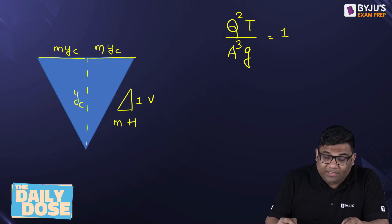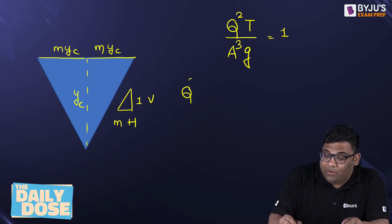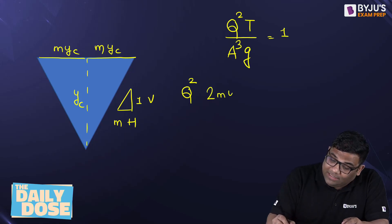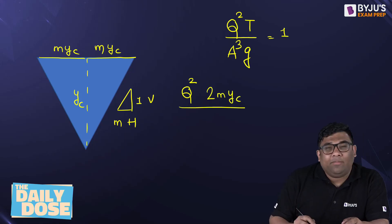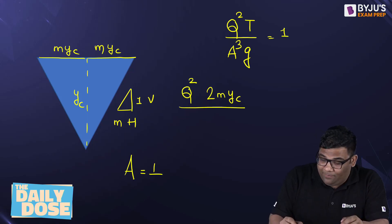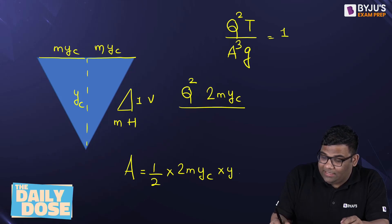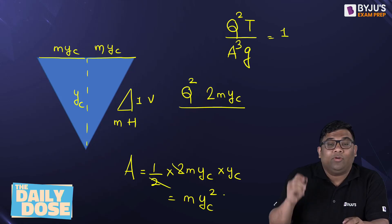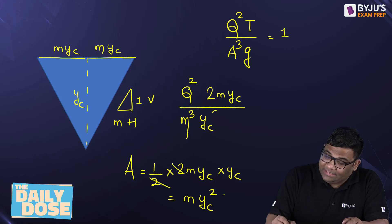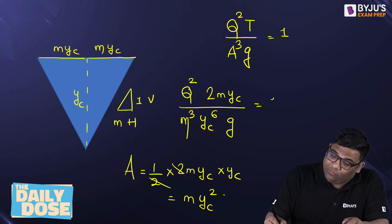When I use this equation, the top width will be 2m yc. The area of this triangle — area equals half base into height — that is equal to m yc squared. So when I put area cubed, it will be m cubed yc to the power 6, and then g is equal to 1.